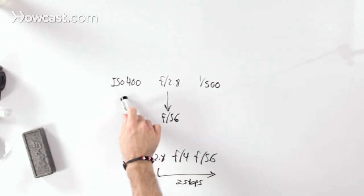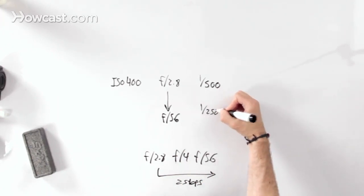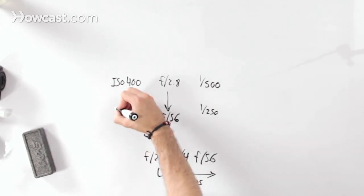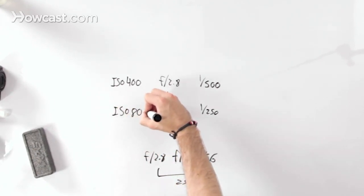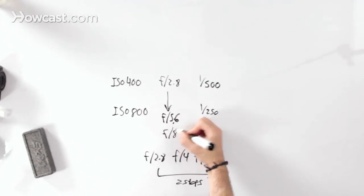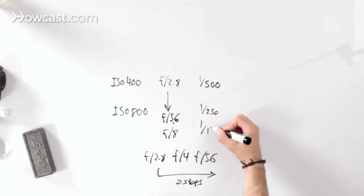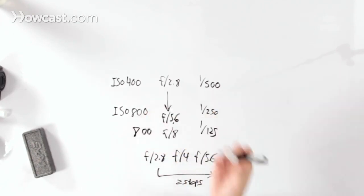That means we need to adjust either the ISO or the shutter speed accordingly to maintain the same exposure. What we could do is take the shutter speed down one stop to one two-fiftieth and bring the ISO up one stop to ISO 800. This would be the same exact exposure. Now, if f/5.6 isn't cutting it and we want even more depth of field — say f/8, that's one more stop — we can bring the shutter speed down one more to one one-twenty-fifth and keep the ISO at 800. Again, it's the same exposure. It's just a matter of narrowing that first exposure and doing the math in your head to adjust accordingly.